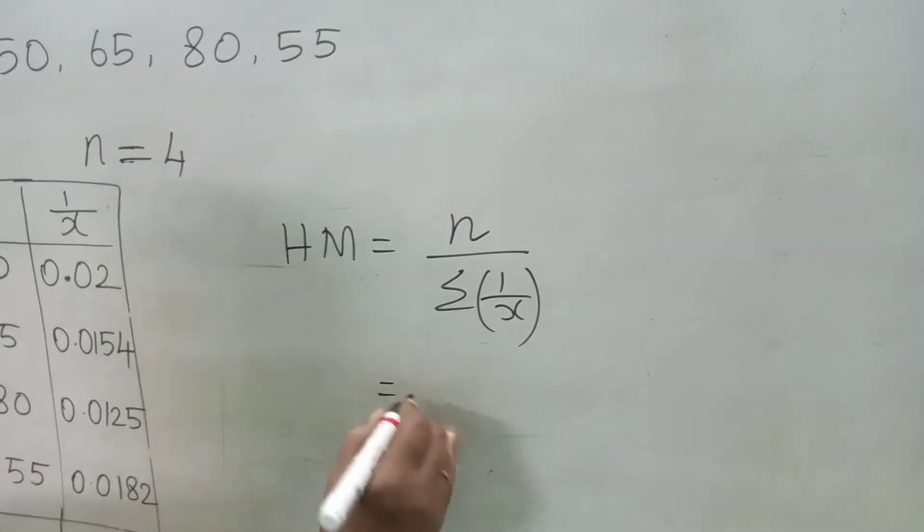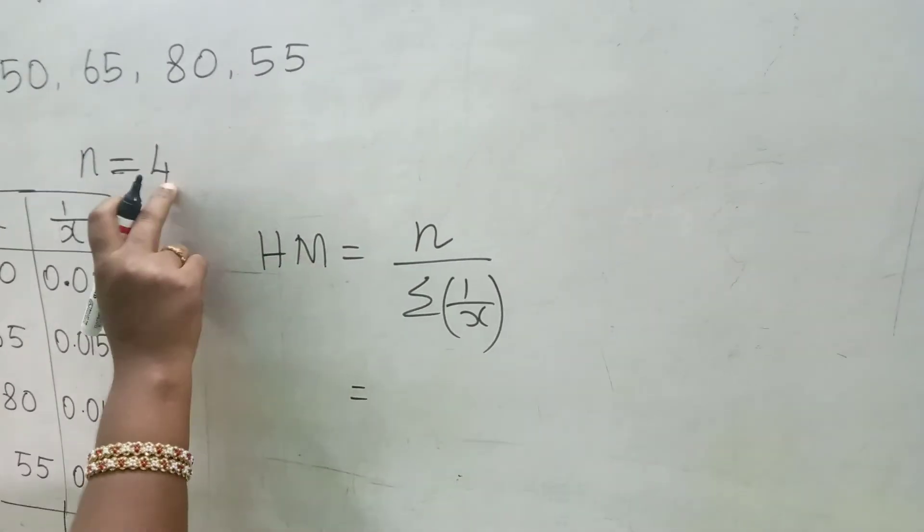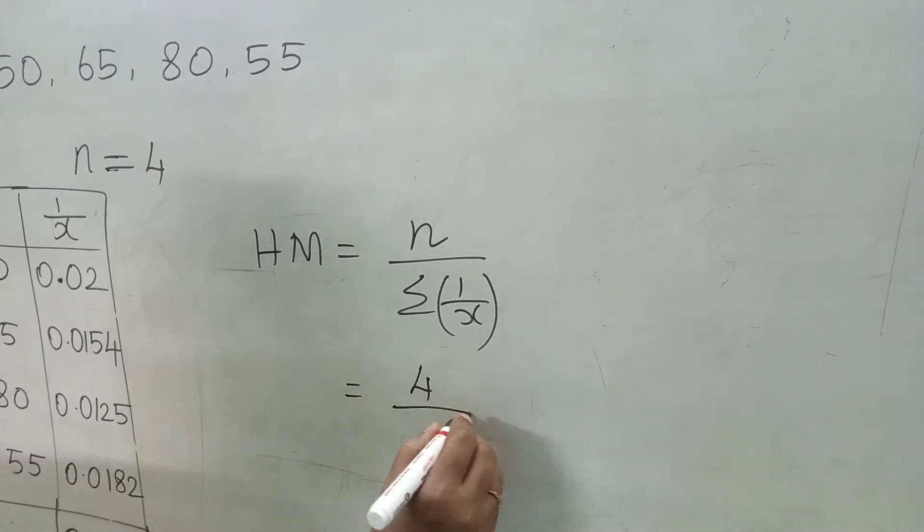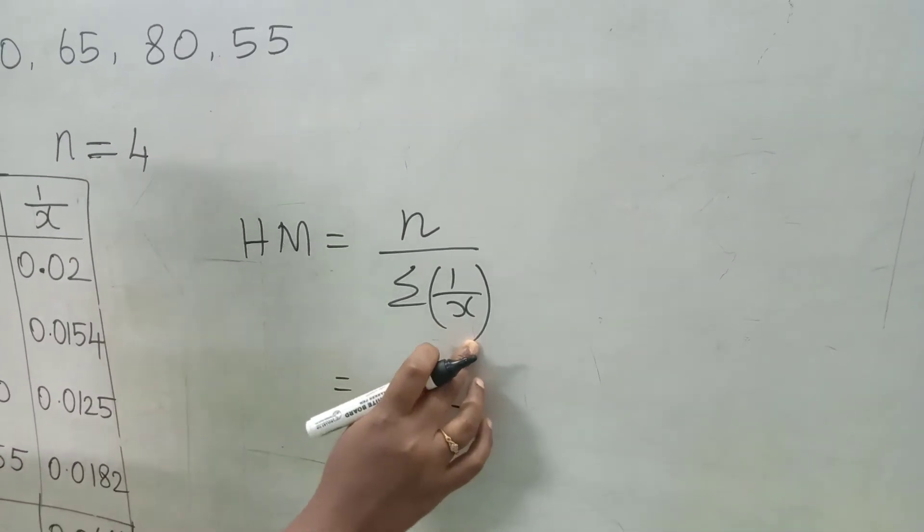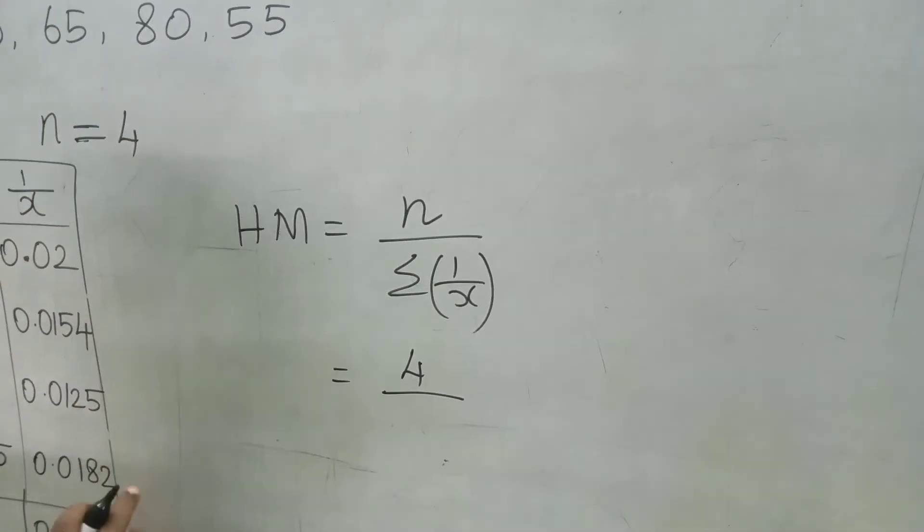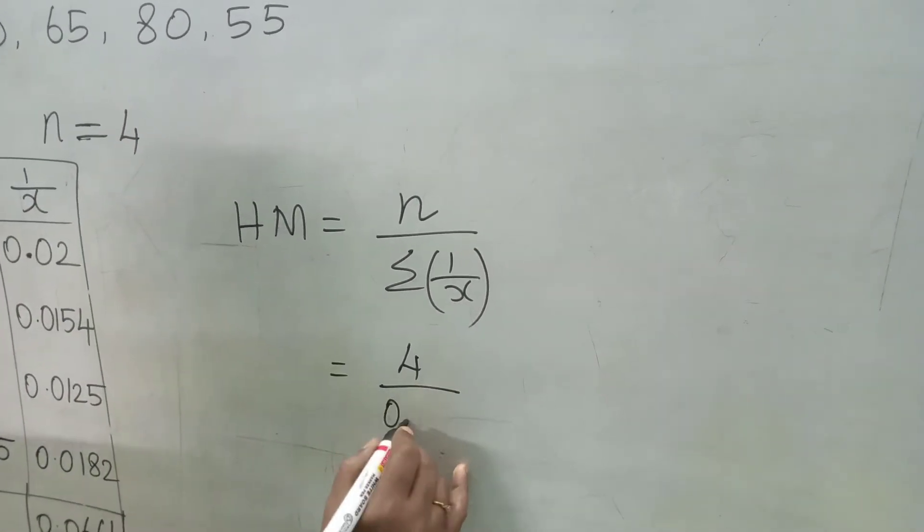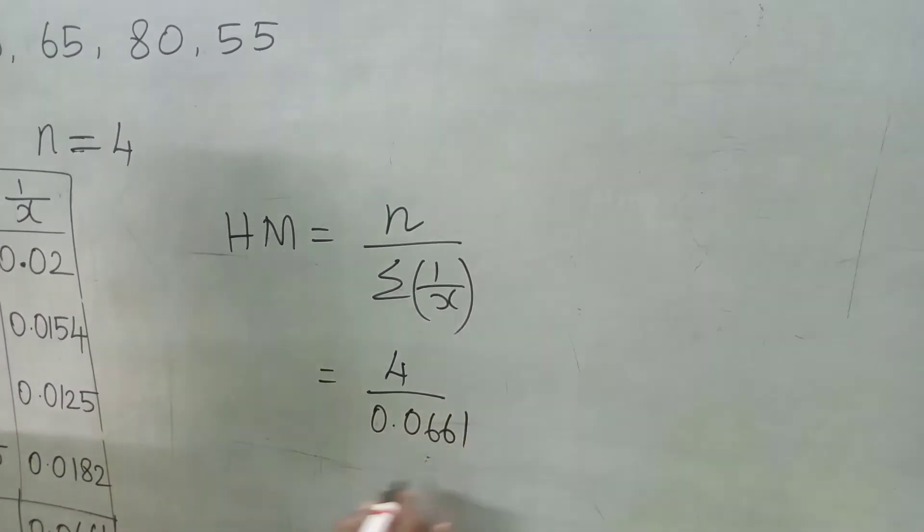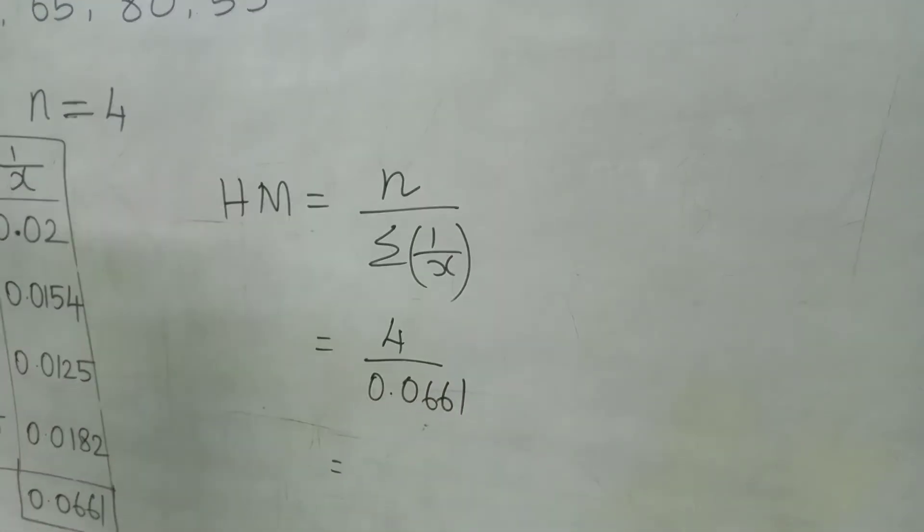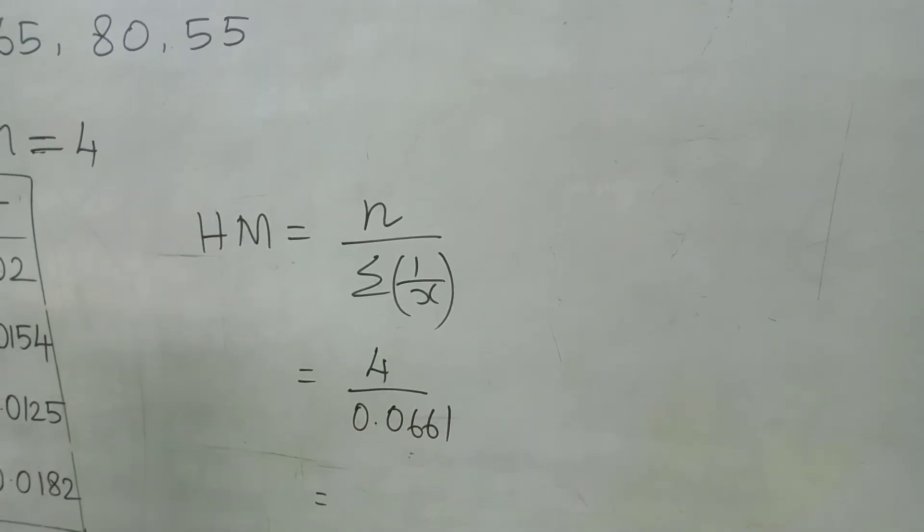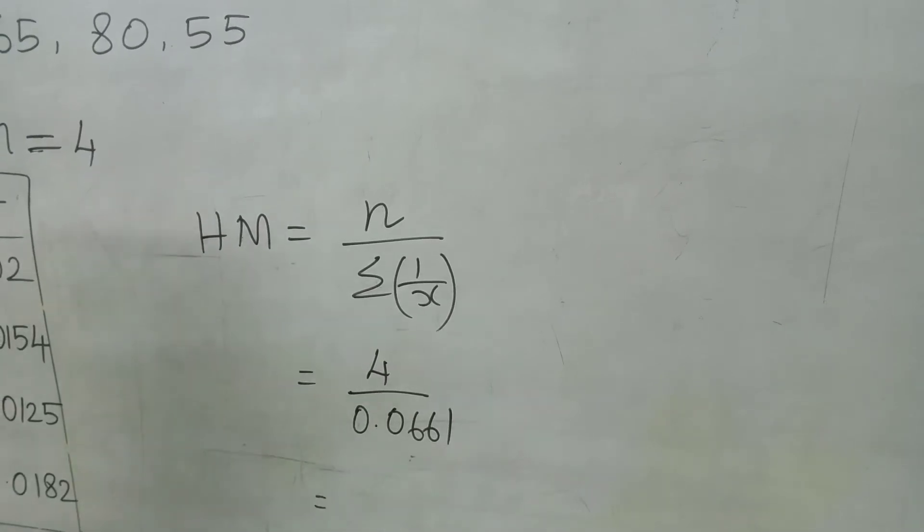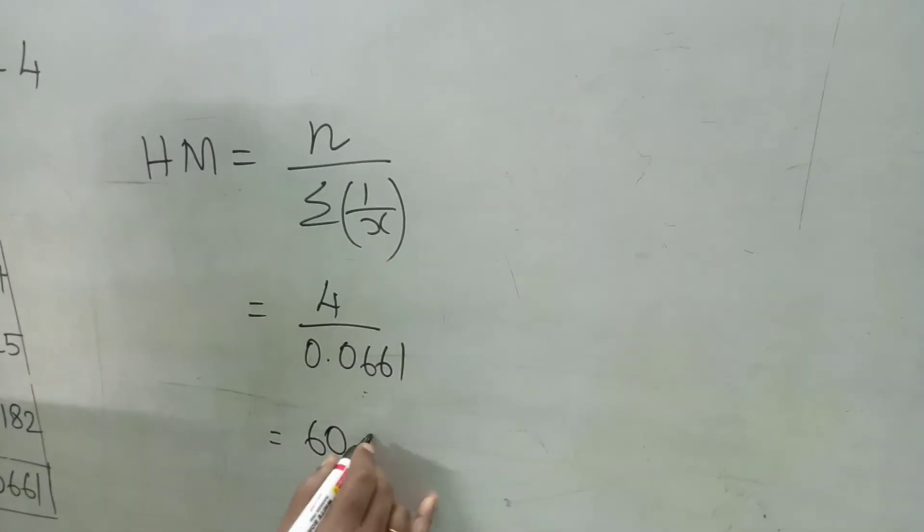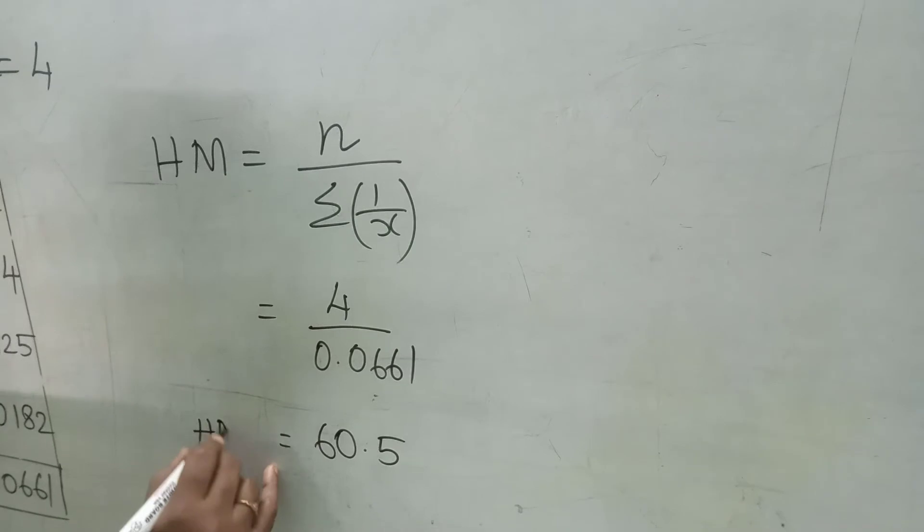Substituting these values in the formula N. N is 4 divided by sigma 1 by X, which is 0.0661. With the help of the calculator we find 4 divided by 0.0661. That is 60.5. This is our harmonic mean.